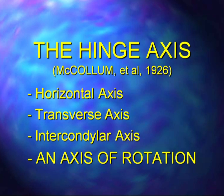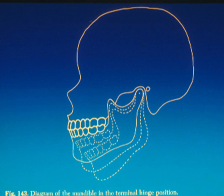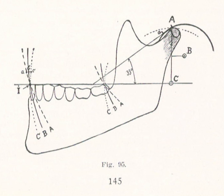It all starts with the hinge axis. McCullum and his group, in 1926, established that there's basically an axis of rotation within the mandible. Yet most procedures are done on very simple, disposable plastic articulators, where the axis of rotation is actually in line with the occlusal plane — it's at pathway C. If you have an axis of rotation at pathway C, it's a pure vertical movement out of the fossa.